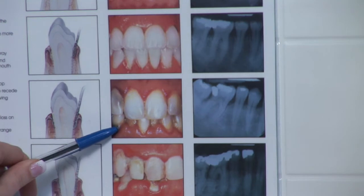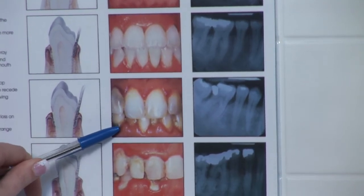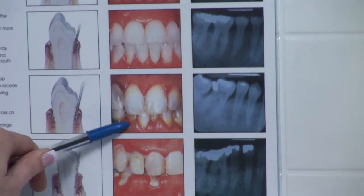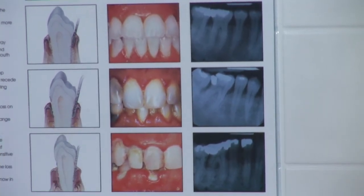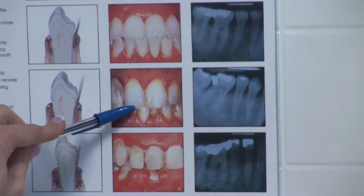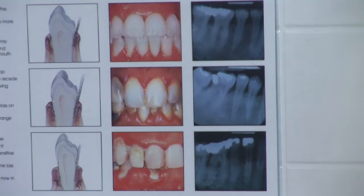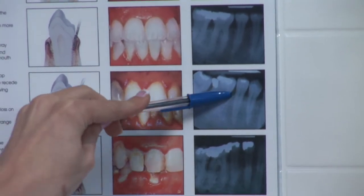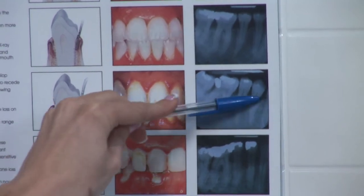Also, your front teeth may begin to drift slowly — they might start moving back and forth. That's due to significant bone loss. When you have moderate periodontitis, your gums start to recede, and as they're receding it allows more bacteria and debris to get up underneath your gums, which is going to start eating away at your bones.